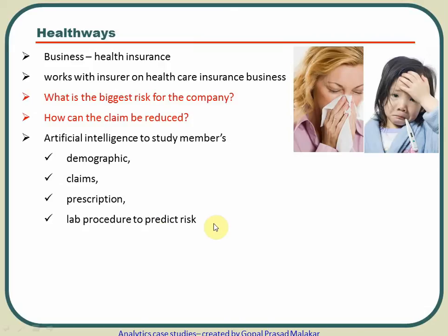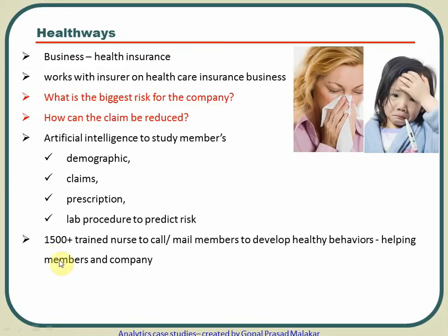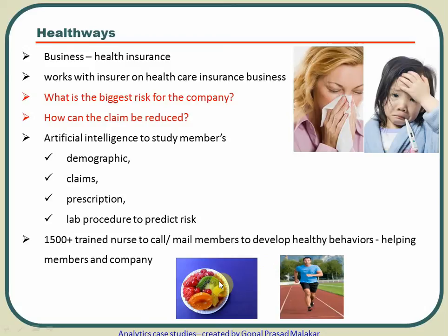Using these four things — demography, claim patterns, prescriptions, and lab procedures — it can predict the risk: that this customer is going to fall sick because of this reason. It then provides that output to 1,500 plus trained nurses who call or mail members to develop healthy behavior. The AI produces output that is easily understood by these nurses, who then contact customers with specific, personalized health guidance.